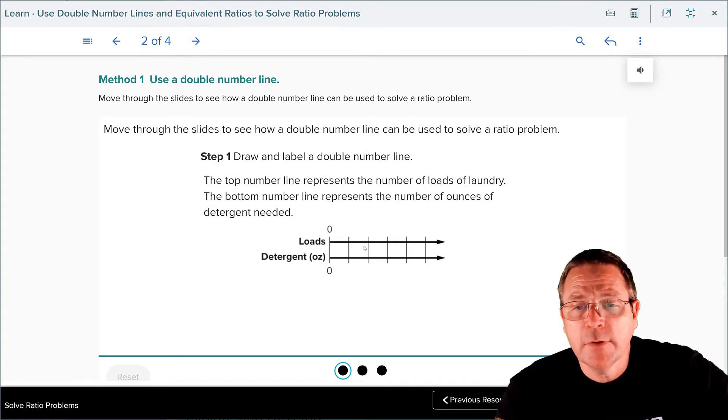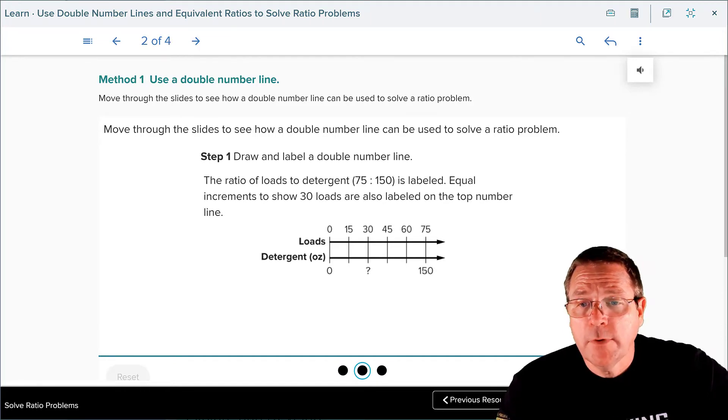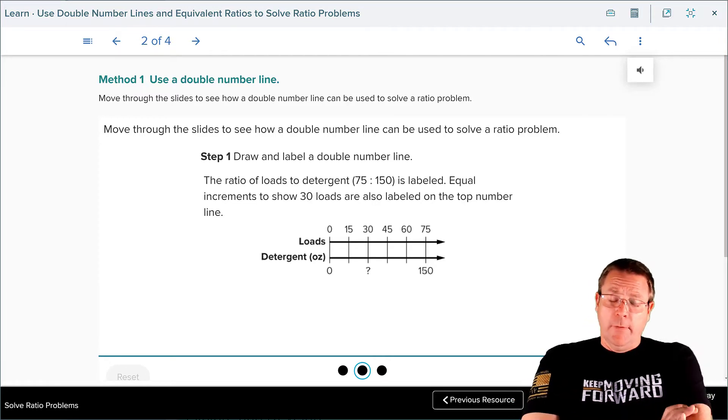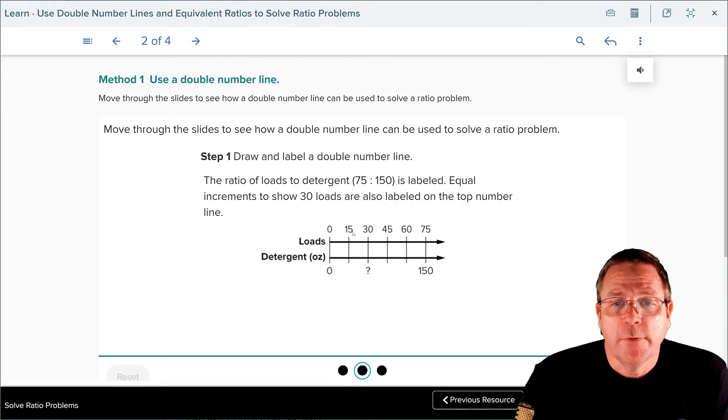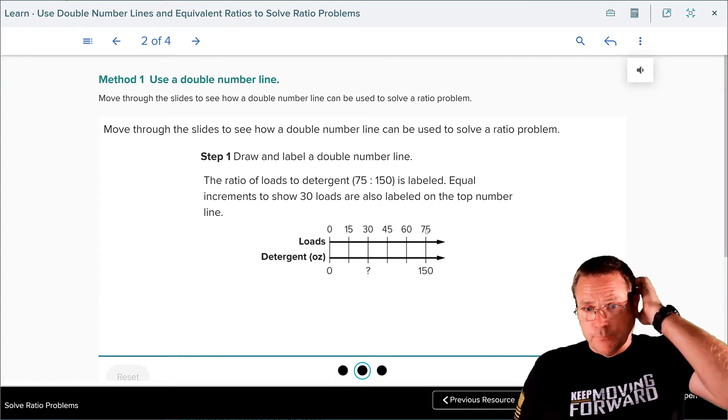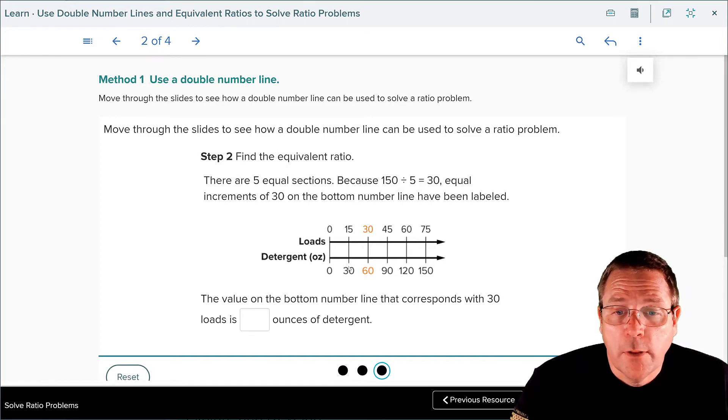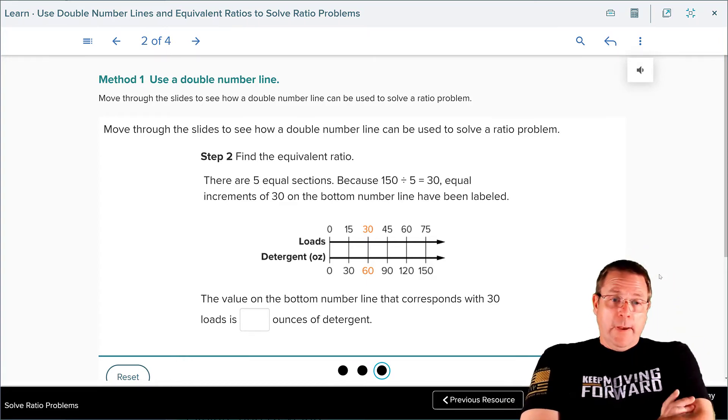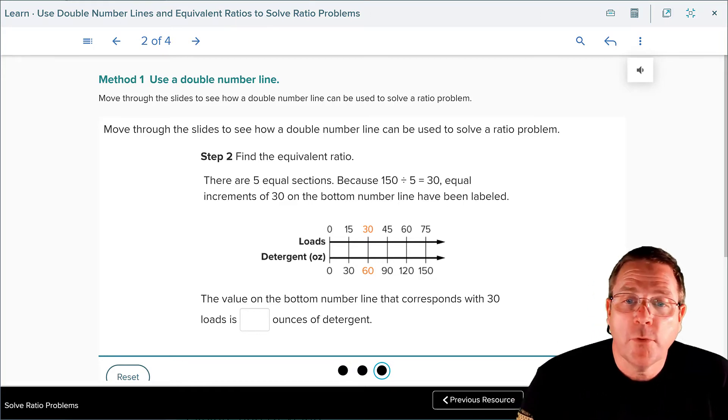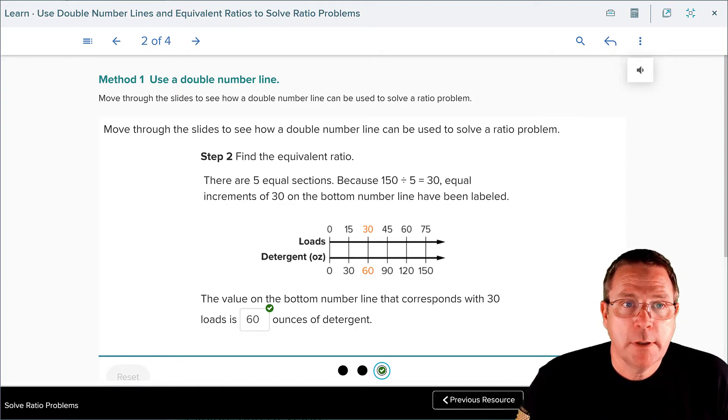You can see this is broken down into five sections. The reason they chose five is because both 75 and 150 are easily divisible by 5. If you divide 75 by 5, you'd end up getting groups of 15: 15, 30, 45, 60, and 75. If you divide the 150 by 5, then you would get groups of 30: 30, 60, 90, 120, and 150. The value of the bottom number on the number line that corresponds with the 30 loads is 60. So it's going to take 60 ounces of detergent.